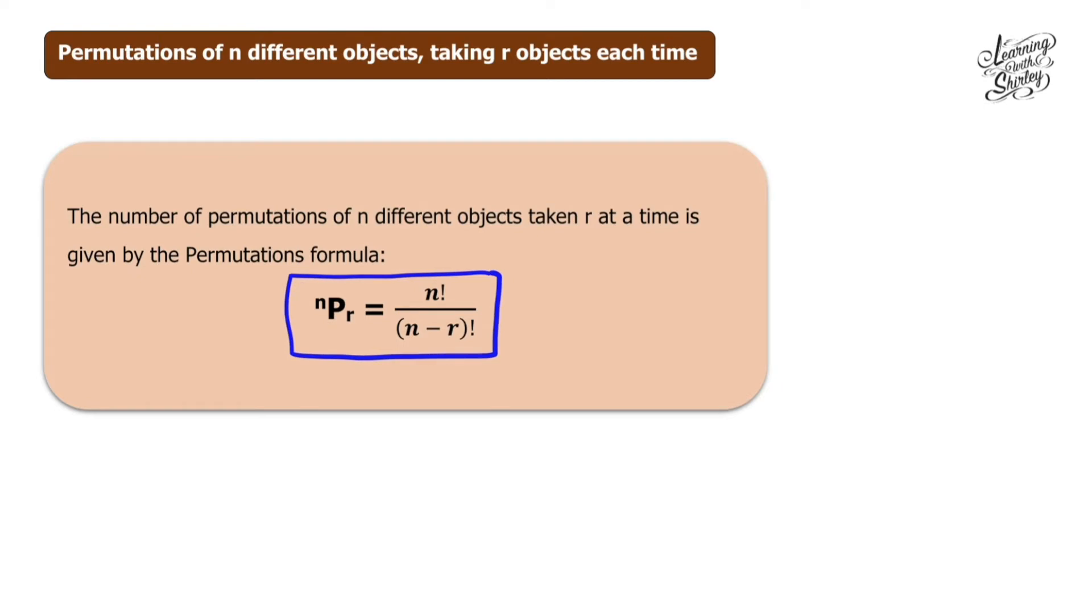Let's look at example number 1. Without using a calculator, find the value of 6P4. First, you need to know the formula: nPr equals n factorial over (n minus r) factorial. Now our n is 6 and our r is 4.